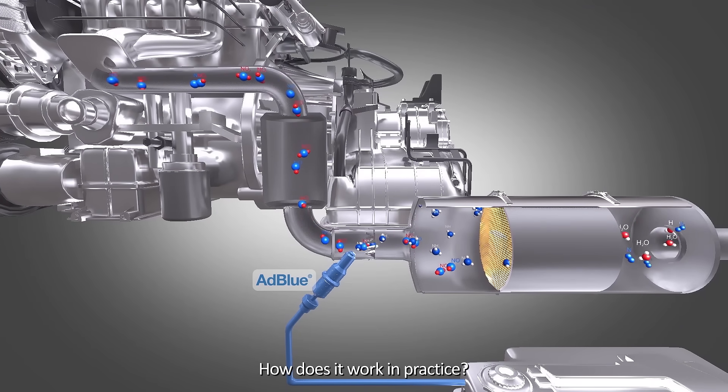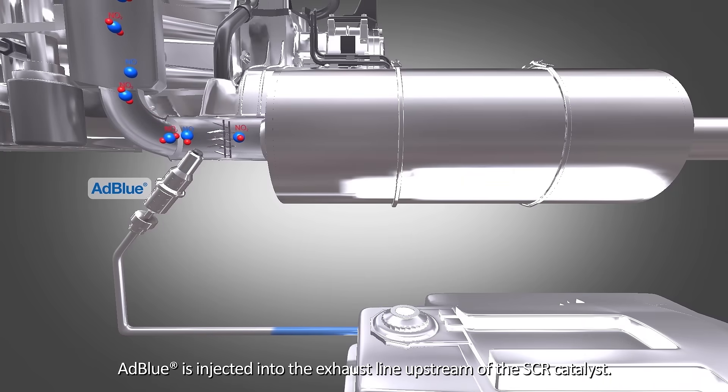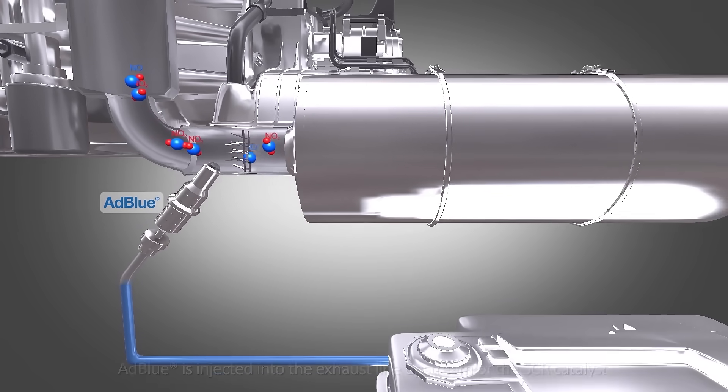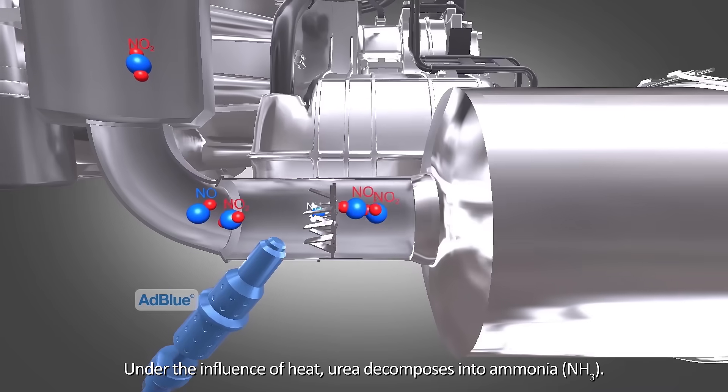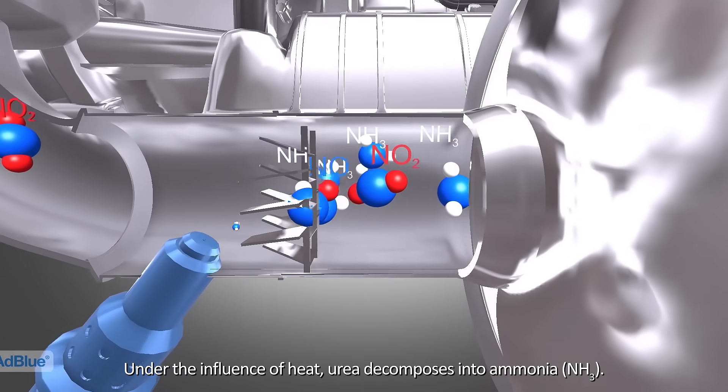How does it work in practice? AdBlue is injected into the exhaust line upstream of the SCR catalyst. Under the influence of heat, urea decomposes into ammonia, NH3.